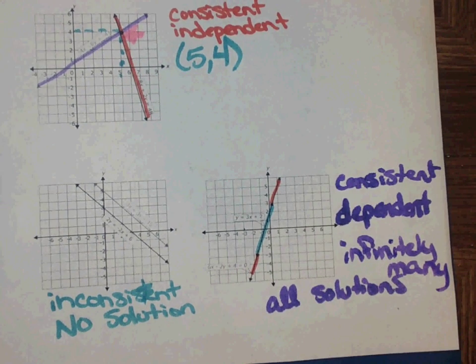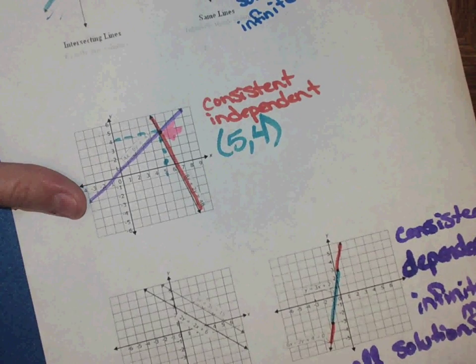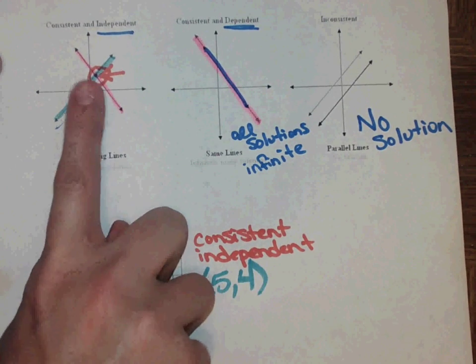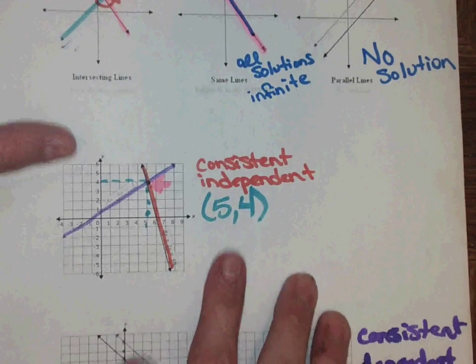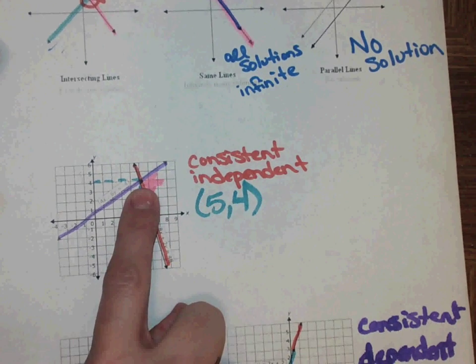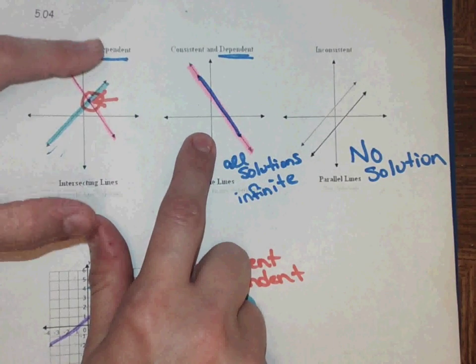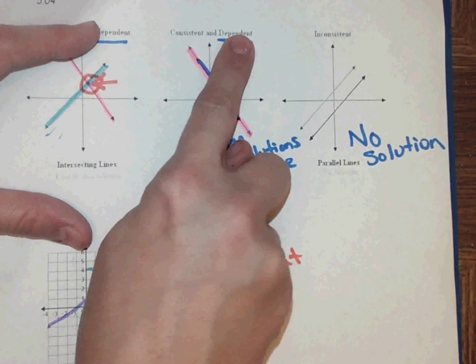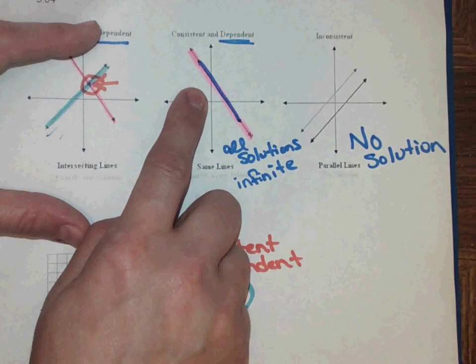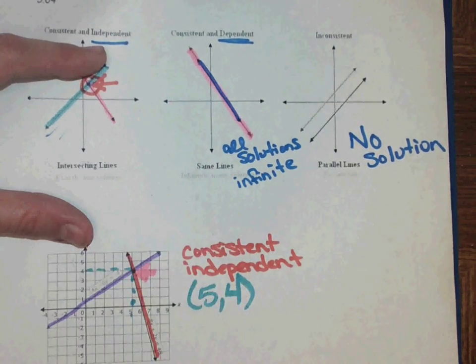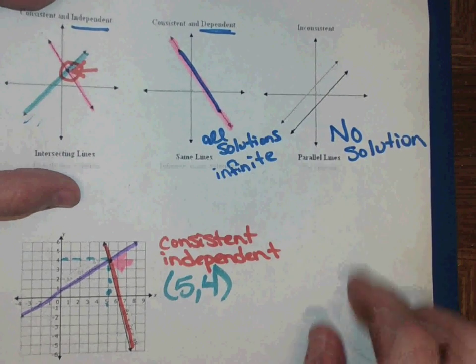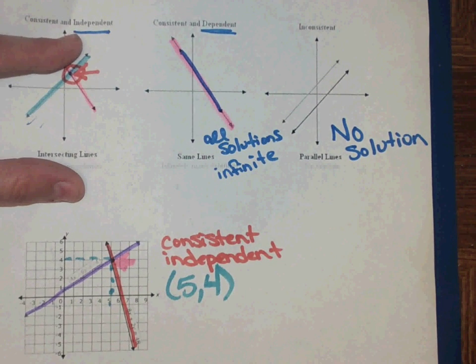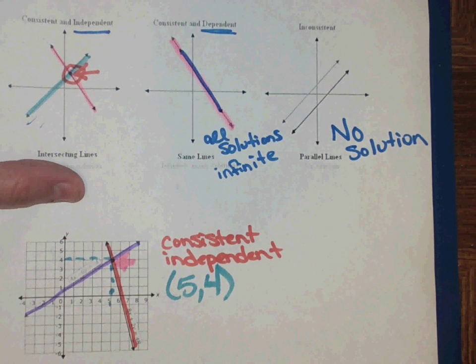So remember, you have your three different sets of lines. You've got your consistent and independent, meaning they have one solution. And you can find that solution just by finding the ordered pair of where they cross. If you have one line piggybacking the other, it's infinitely many solutions and it's consistent and dependent. Remember, it kind of looks like you're piggybacking one line with the other, so you're dependent on them to carry you around. And inconsistent is no solutions because they never cross. I hope this helps. This is 5.04.